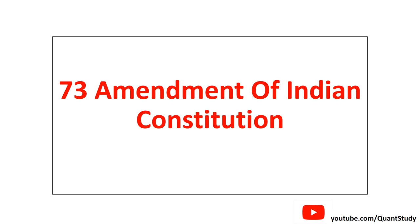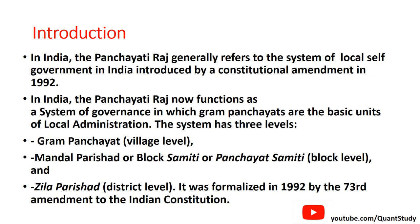Now we will go through the text and I will explain it so you can understand. The introduction: Panchayati Raj is the system of Local Self Government at the local level. The 73rd Amendment in 1992 established three levels — the Gram Panchayat at the village level, the Mandal Parishad at the block level — it was formalized in 1992 by the 73rd Amendment of the Indian Constitution.